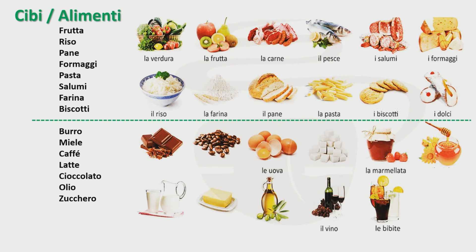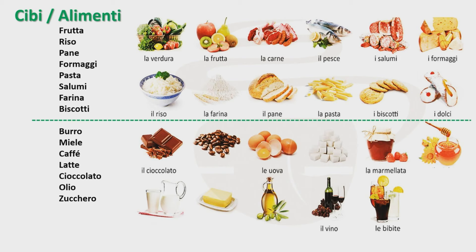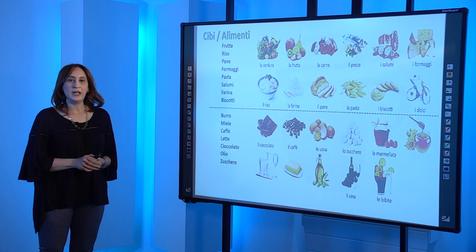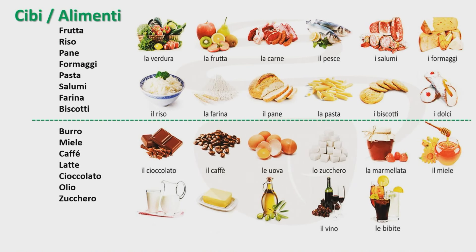Adesso vediamo la seconda lista. Abbiamo burro, miele, caffè, latte, cioccolato, olio e zucchero. La prima foto, molto facile, si tratta del cioccolato. Poi il caffè, le uova, e la numero quattro si tratta dello zucchero. Poi abbiamo la marmellata e la foto che segue è la foto del miele. Poi abbiamo il latte, il burro e l'olio d'oliva, che è un ingrediente principale nella cucina italiana e mediterranea.